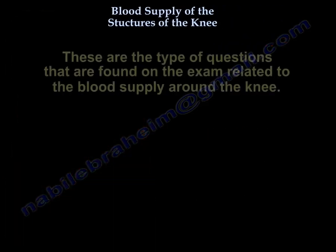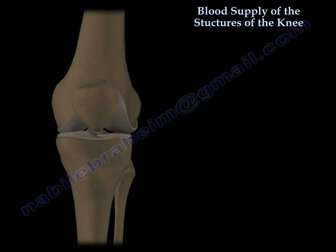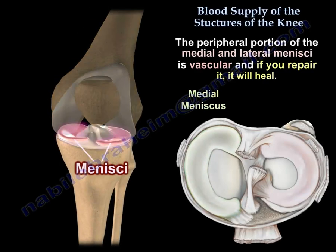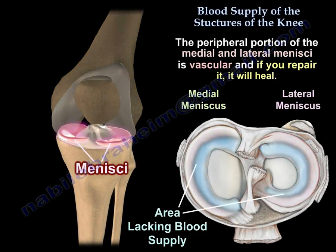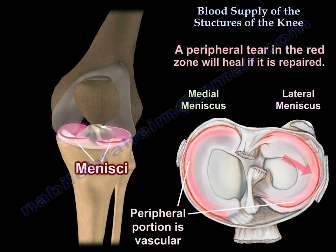These are the types of questions that come up in exams related to blood supply. The peripheral part of the meniscus is vascular, and if you repair it, it will heal. A peripheral tear in the red zone will heal if it is repaired.